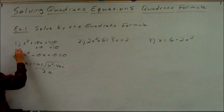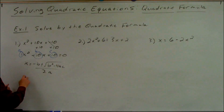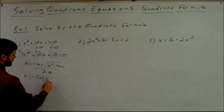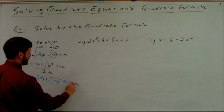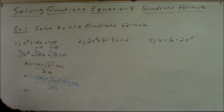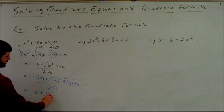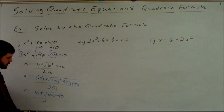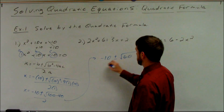From this point it's a matter of just plugging in your a, b, and c, and reducing a radical or simplifying a fraction. So x equals negative b, which is negative 10, plus or minus square root of b squared — 10 squared — minus 4 times a, which is 1, times c, which is 10, all over 2 times a, which is 1. Order of operations: take care of inside the square root first. So negative 10 plus or minus — 10 squared is 100, 4 times 1 times 10 is 40 — over 2 times 1, which is 2. That gives us negative 10 plus or minus square root of 60 over 2.